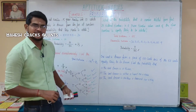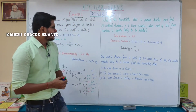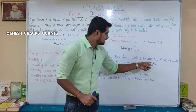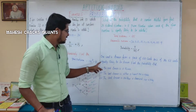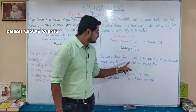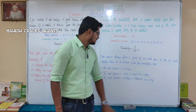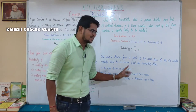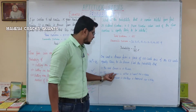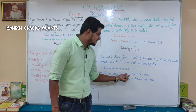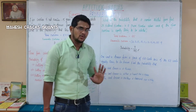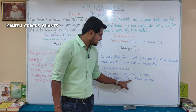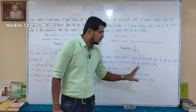Next question: one card is drawn from a pack of 52 cards. Each of the 52 cards is equally likely to be drawn. Find the probability that: first, the card drawn is a queen; second, the card drawn is either a heart or a spade; third, the card drawn is either a diamond or a king.